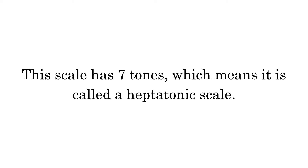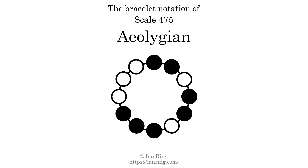This scale has 7 tones, which means it is called a heptatonic scale. This is a bracelet notation diagram of scale 475. The shaded circles represent tones that appear in the scale, and they are read clockwise, starting at the top.